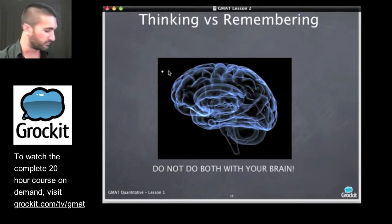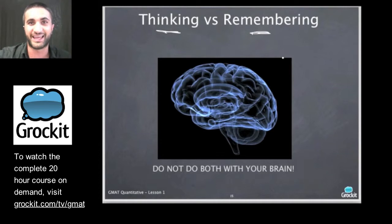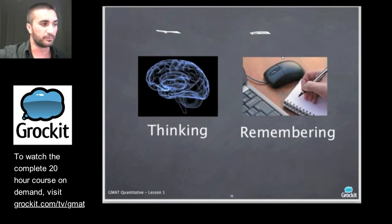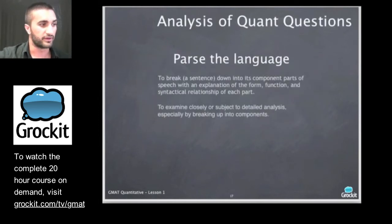Let's go back to this old brain image and remind ourselves that there's two things we have to do on the GMAT. We have to think and we have to remember. Do not do both of these things with your brain because that's what the GMAT wants you to do. If you do, you're going to tax your brain. You're not going to be able to think as well. So you want to use your brain for thinking and the GMAT scratch pad for remembering.